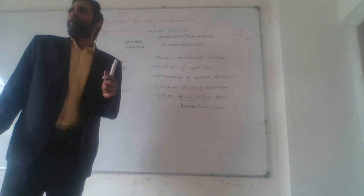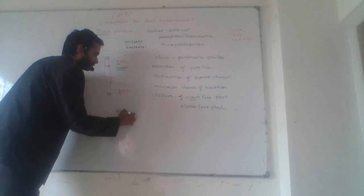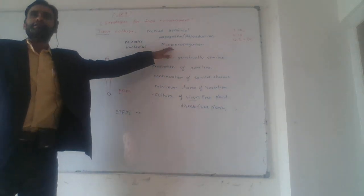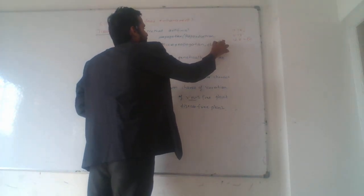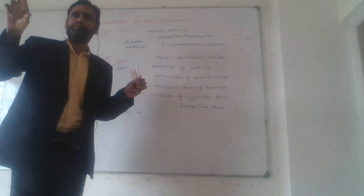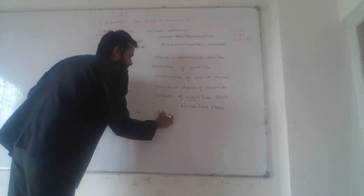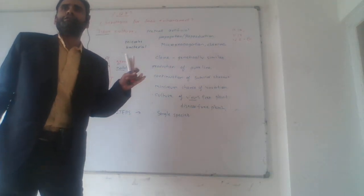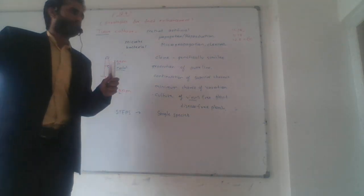In tissue culture there are mainly five to seven steps. Now we will discuss those steps. Tissue culture is also known as micropropagation, cloning of the natural plant, or artificial cloning. It is not hybridization — in Mendel's experiment there was hybridization between two species, but tissue culture uses a single species.